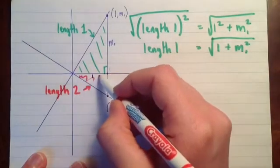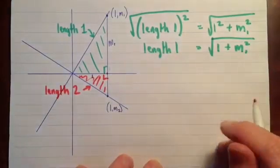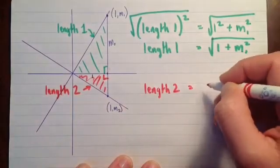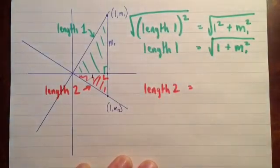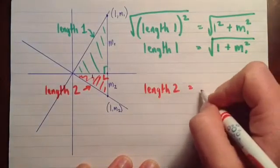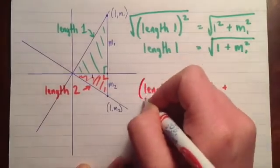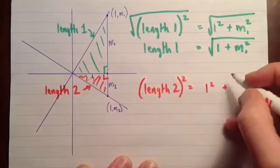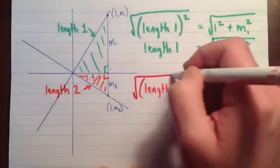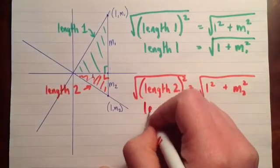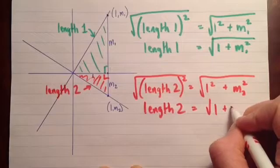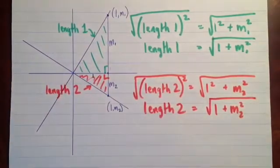And then I'm going to do the same thing for the red length down here. I'll use this right triangle, also a right triangle. So with Pythagorean theorem on this, length two now is the hypotenuse. This side is the same side as before, that's one long. And this is m2 long. So the length of that squared is one squared plus m2 squared. And now, to isolate length two, I'll take the square root of both sides to undo that squared. And I have length two equals the square root of one plus m2 squared.